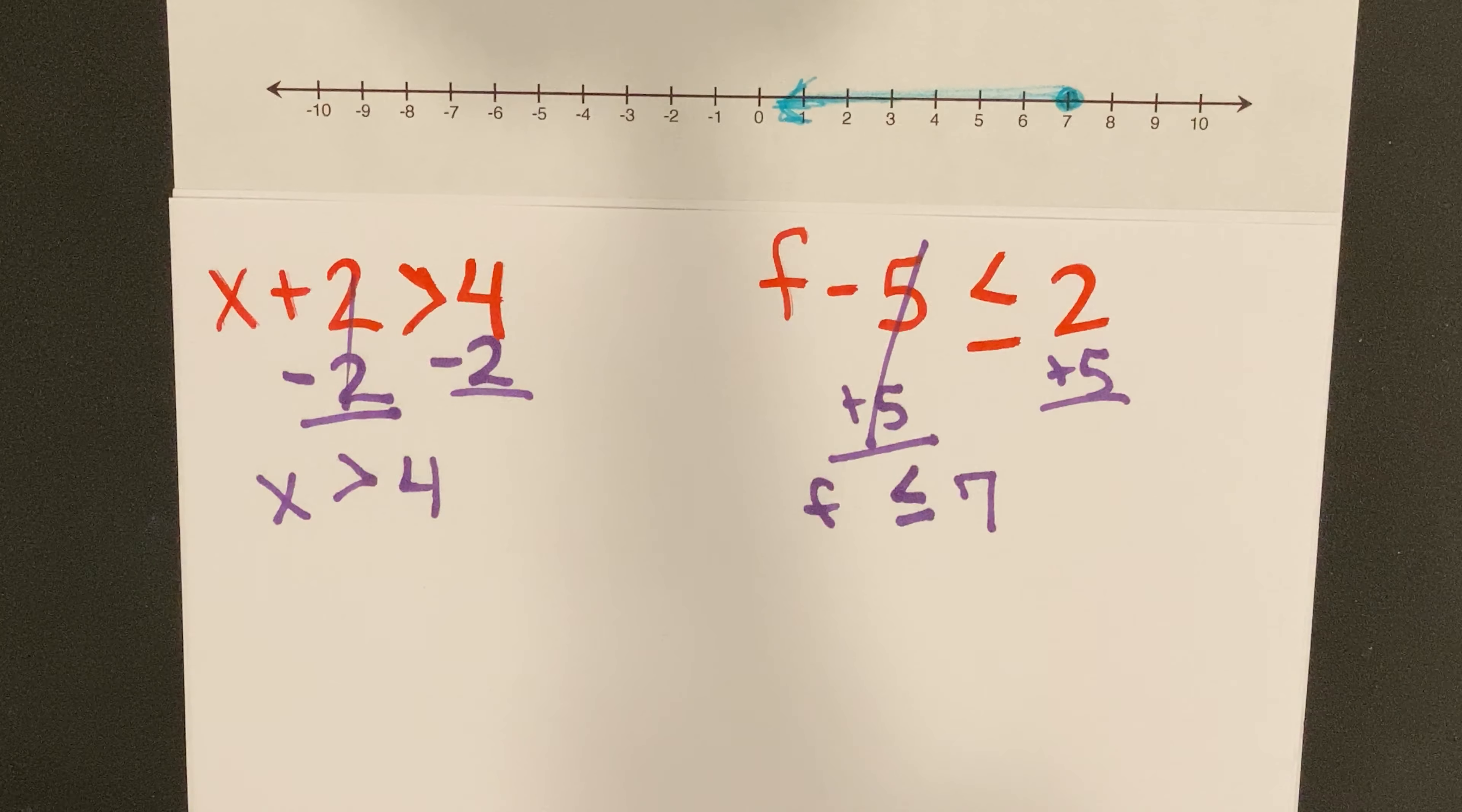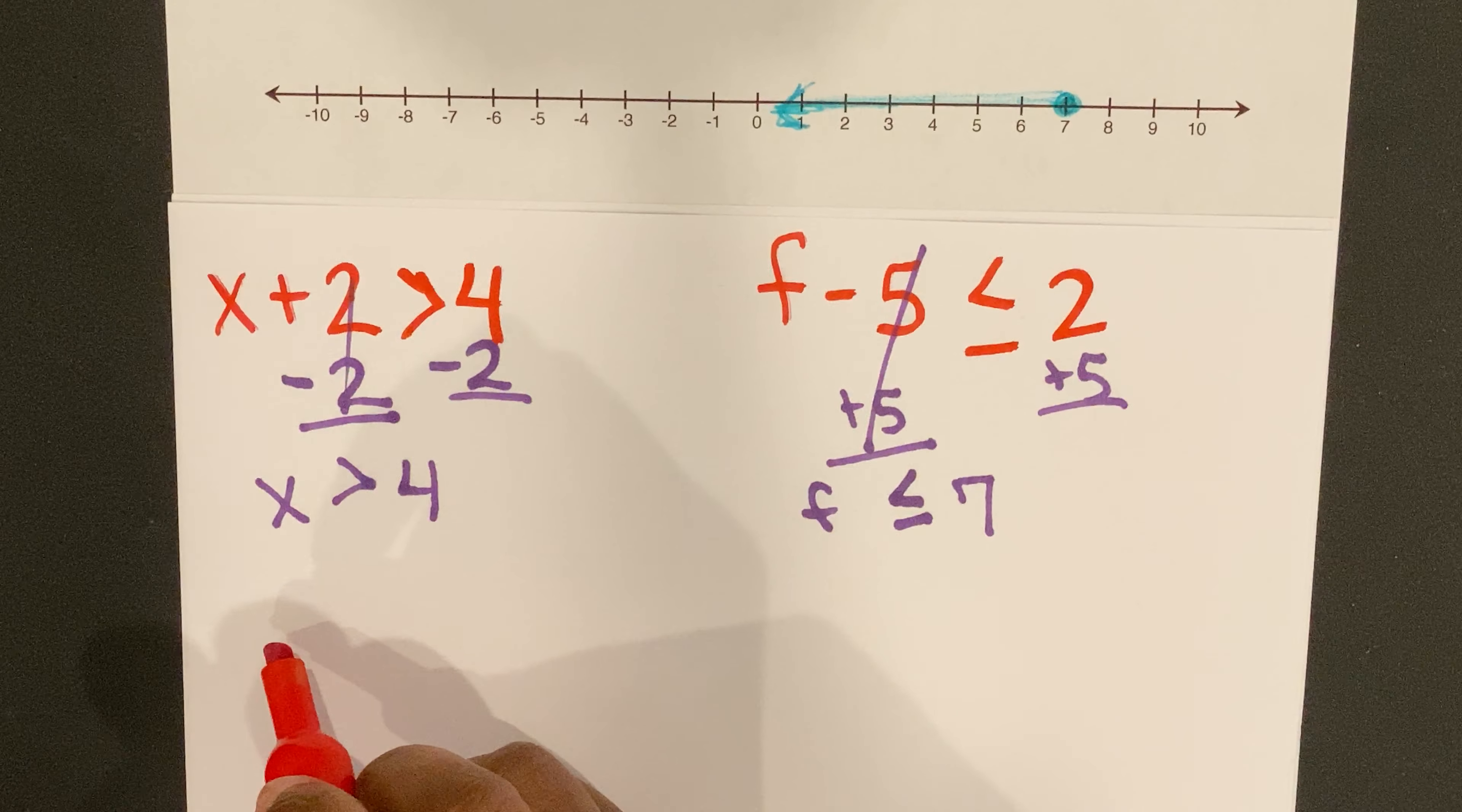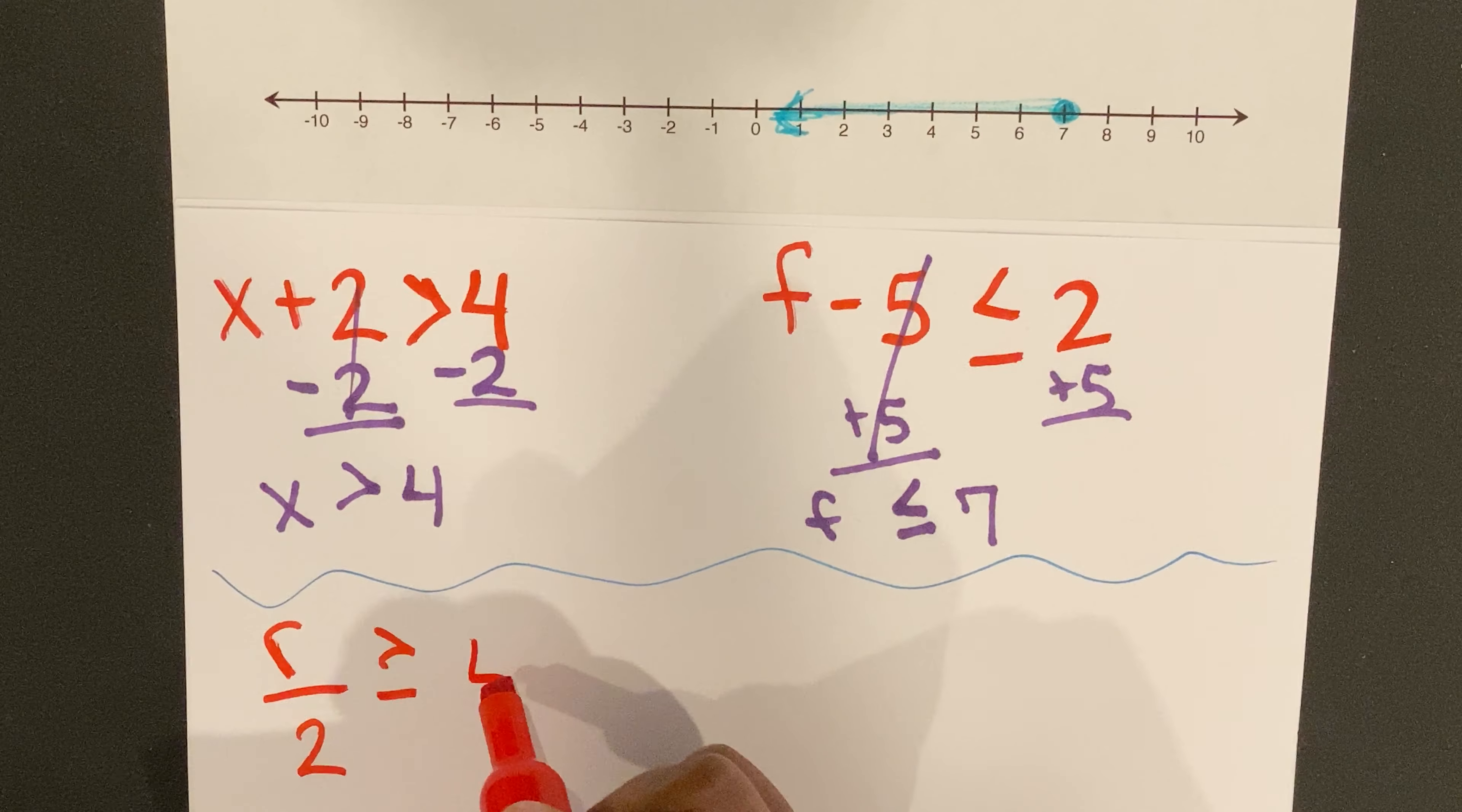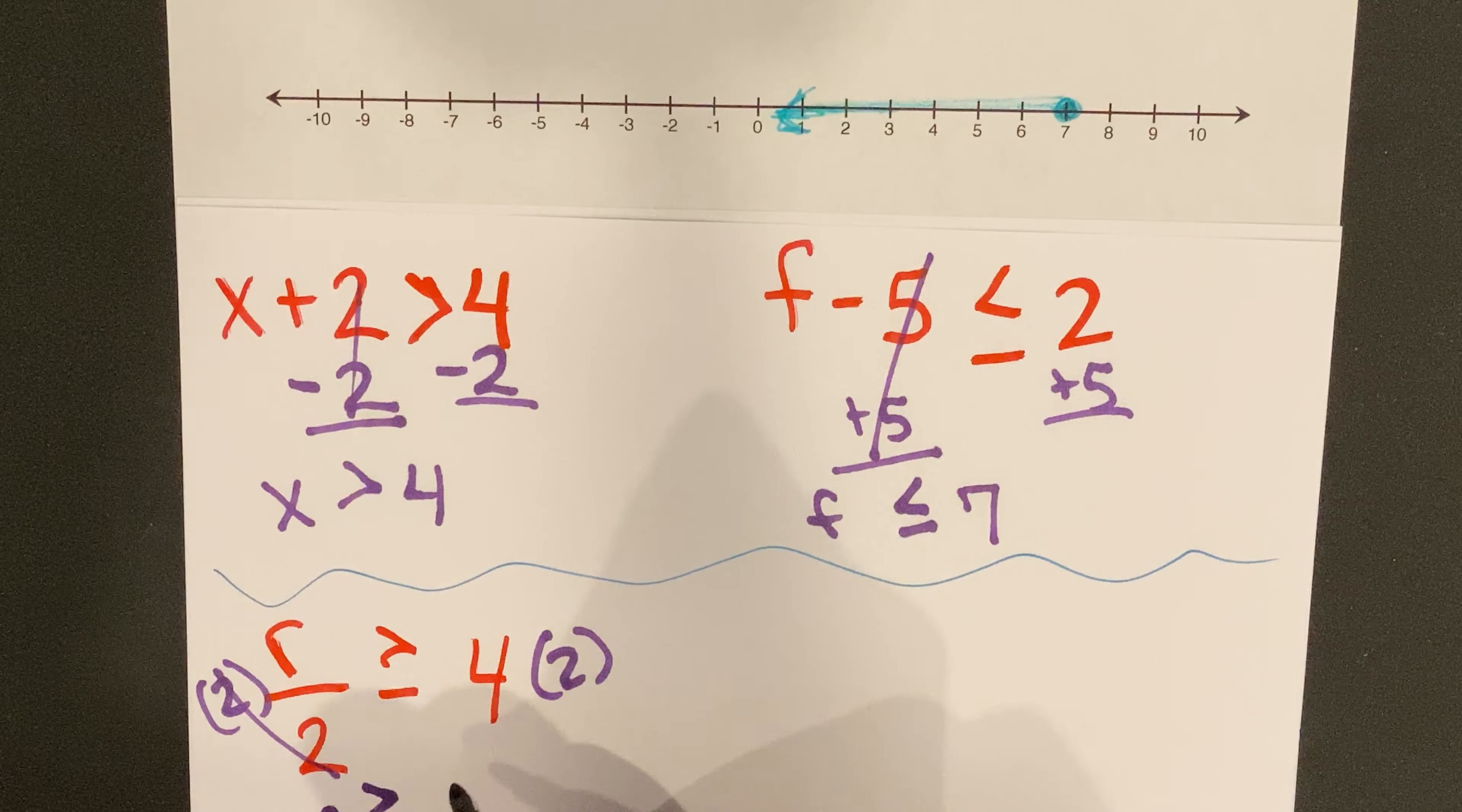Now I'm going to show you one that has to include a negative number. Well, let's do one that does not have a negative number first. We'll do R divided by two is greater than or equal to four. All right, inverse operations. Since I need to multiply both sides by two, those equal out to one. R is still going to be greater than or equal to eight.